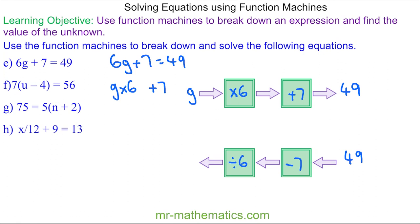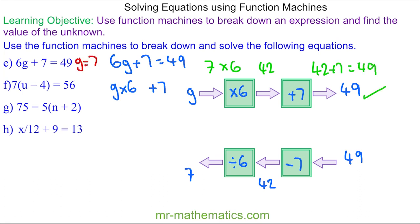49 take away 7 is 42, and 42 divided by 6 is 7. We can check this works: when 7 goes into our machine, we times it by 6 to get 42, and 42 + 7 does make 49.